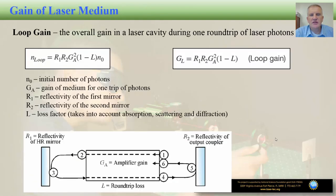In the previous lecture we elaborated that in a laser a process of light amplification takes place, directly related to the gain. We can define the so-called loop gain, which is the overall gain in a laser cavity during one round trip of laser photons. What happens inside the laser is: a photon is created, propagates horizontally, hits the mirror on the left-hand side, comes back as a reflected photon, goes to the lasing medium, excites more atoms to create more photons, then hits the mirror on the right-hand side and comes back — that completes one full loop.